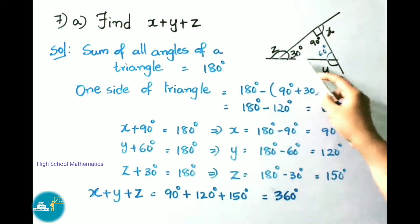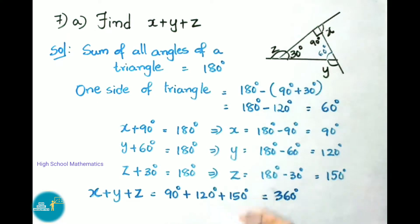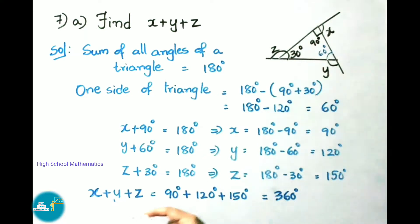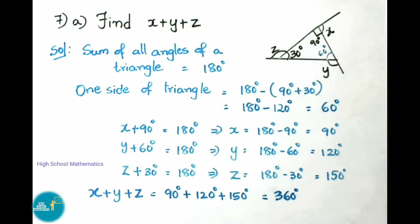Since z and 30° form a linear pair: z + 30 = 180, so z = 150 degrees. Therefore x + y + z = 90 + 120 + 150 = 360 degrees.